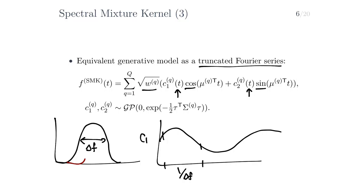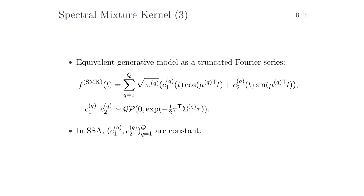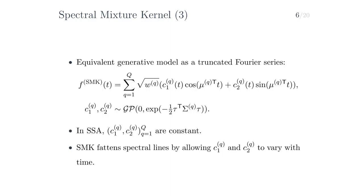If a particular bump in the spectral mixture kernel has width delta f, then for the associated component, the rate at which the coefficient c1 varies will roughly be 1 over delta f. That is, if the bump becomes infinitely small — so delta f goes to zero — then the length scale of c1 becomes very long, and c1 then almost becomes constant. In the sparse spectrum approximation, there is a similar equivalent generative model, but there the coefficients don't vary with time — they are constant. The spectral mixture kernel fattens the spectral lines by allowing the coefficients to slowly vary with time, thereby giving rise to nearby frequencies.